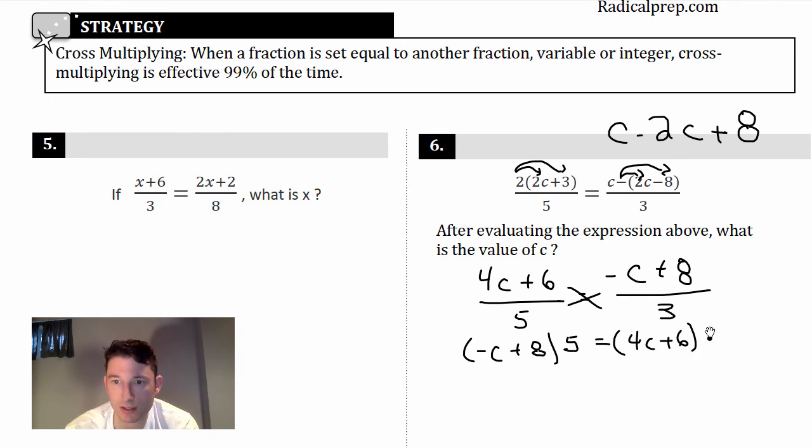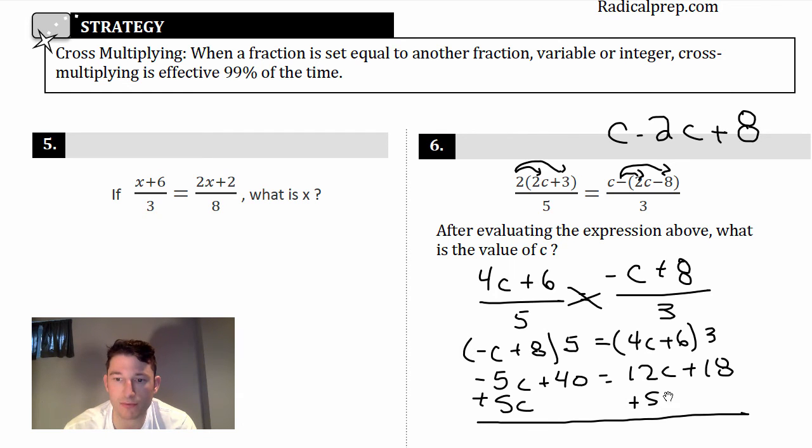So you guys tell me what you get. Hopefully you said already here, first c minus 2c + 8, okay? And c - 2c is just negative c + 8, all over 3. So now let's cross multiply, and I'll keep parentheses in here, so it's negative c + 8 times 5 = 4c + 6 times 3.